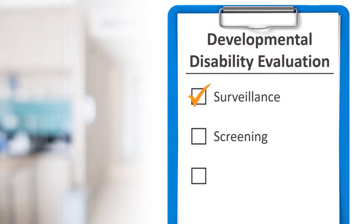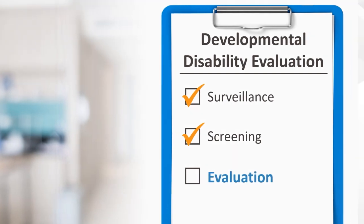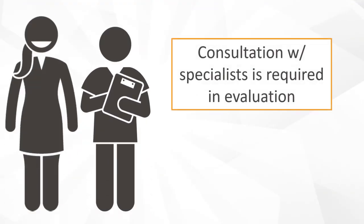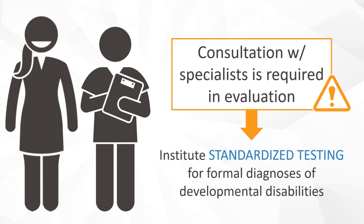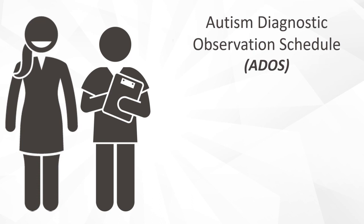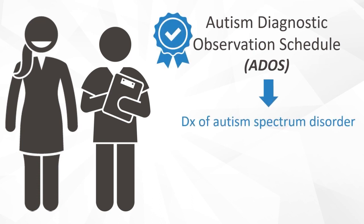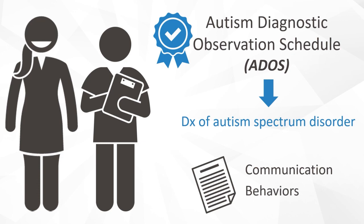If surveillance and screening are concerning for a developmental disability, then the provider will move on to step three, which is evaluation. Consultation with specialists including neuropsychologists and developmental pediatricians are required for this step, as they can institute standardized testing for formal diagnoses. For example, the Autism Diagnostic Observation Schedule, or ADOS, is the gold standard for the diagnosis of autism — a 40 to 60 minute semi-structured interview where communication and behaviors of a child are assessed.